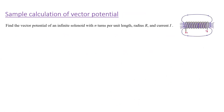Let's do an example — that's a lot of theory. We're going to find the vector potential of a very long or infinite solenoid with n turns per unit length, radius r, and current I. A solenoid is basically a helix with very closely wrapped loops. The parameters are the number of turns per unit length — since it's infinite, we define turns per unit length — along with the radius r and the current I.